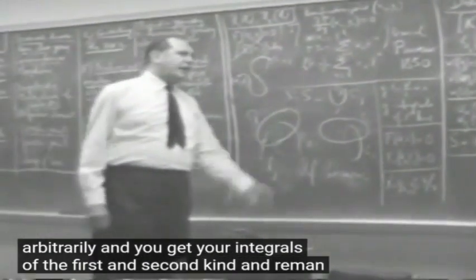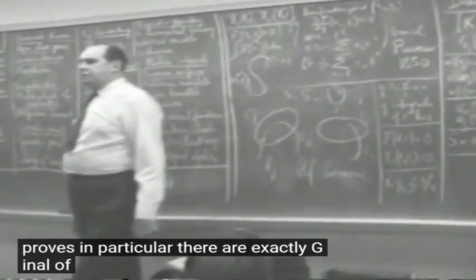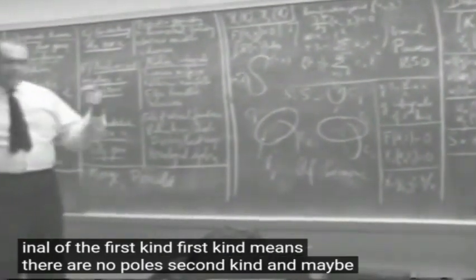Riemann proves in particular there are exactly g integrals of the first kind. First kind means there are no poles; second kind means there will be poles.